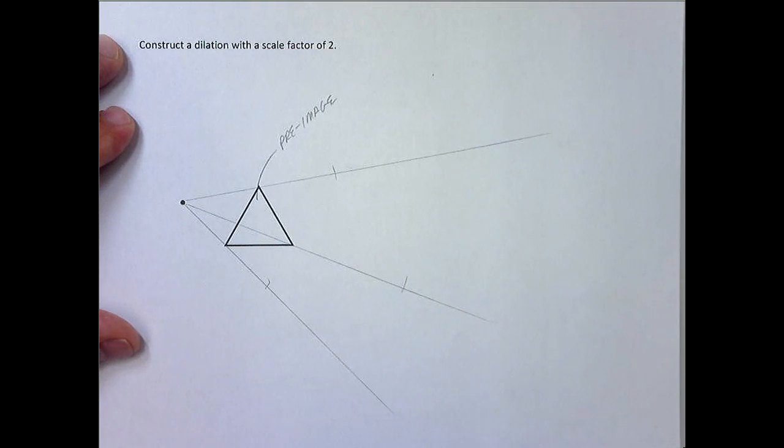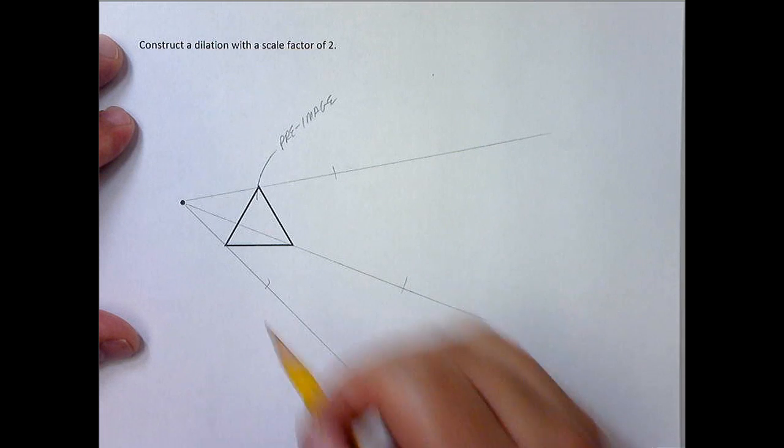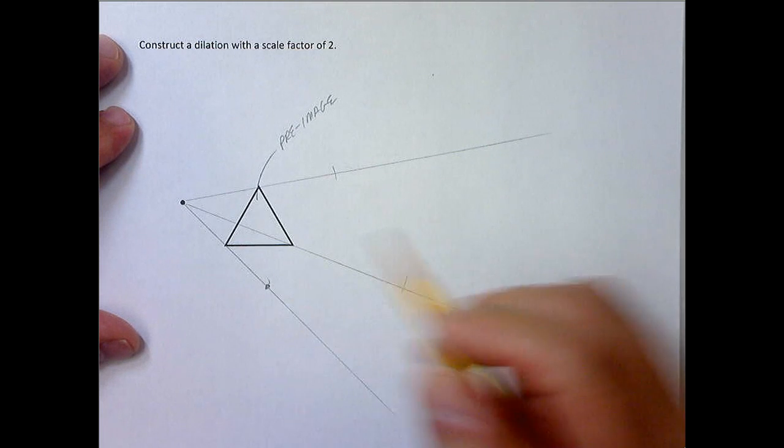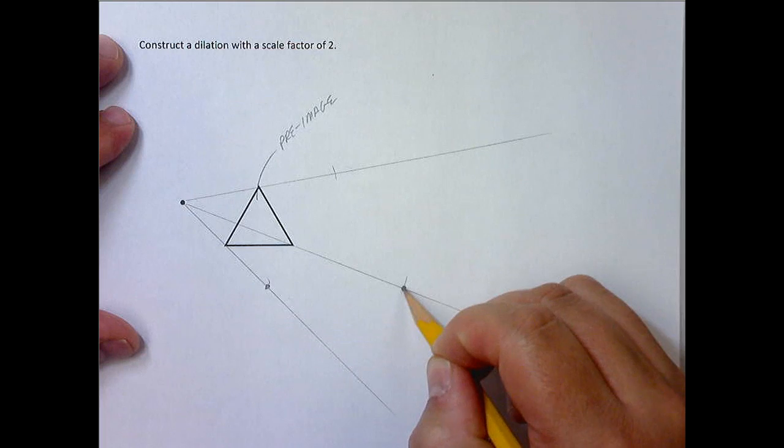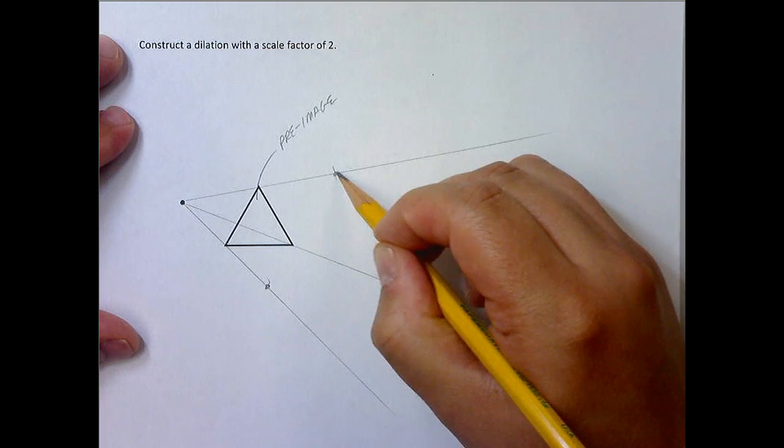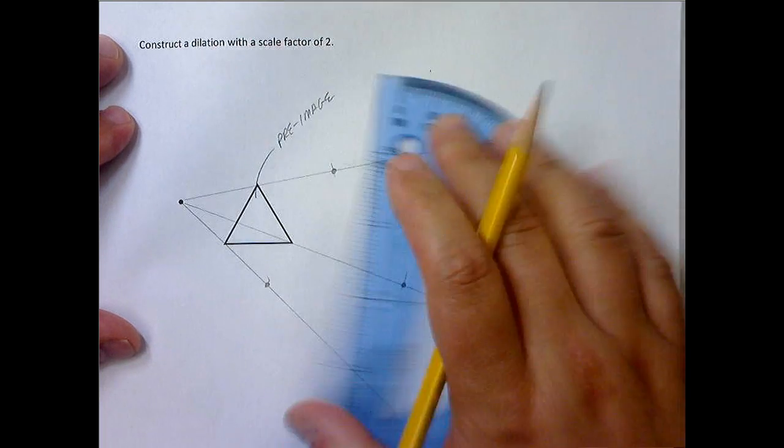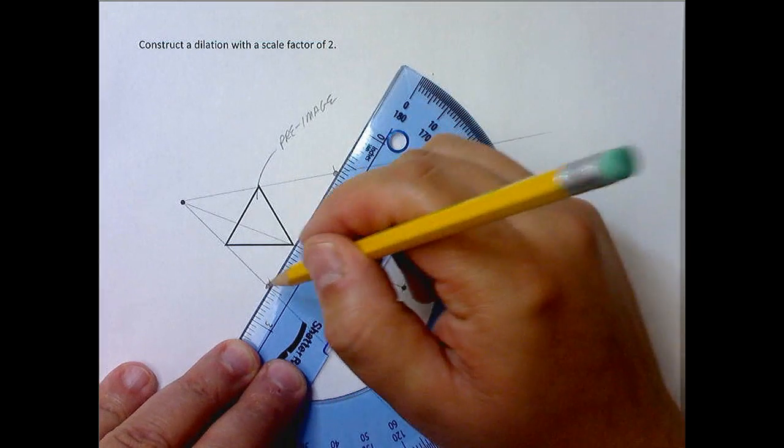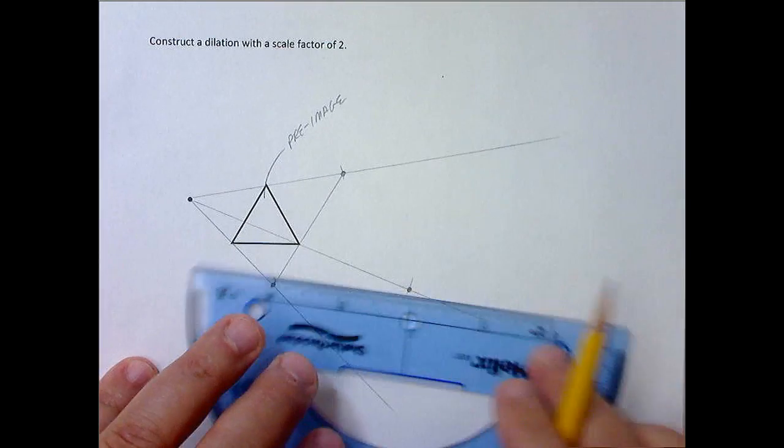So now you've got three compass marks on the three lines that you drew. Those are your three new vertices. And then all you need to do is take a straight edge of any kind and connect those three dots.